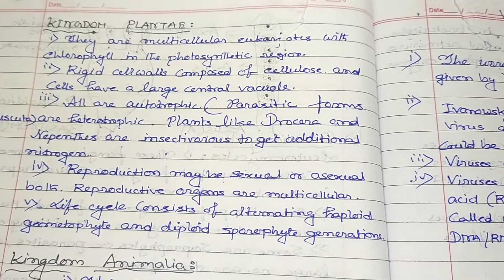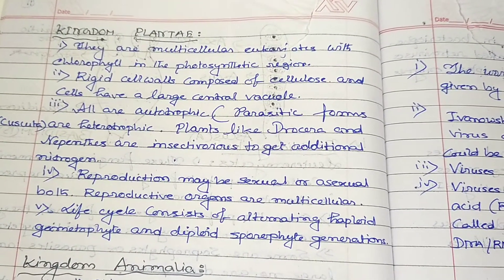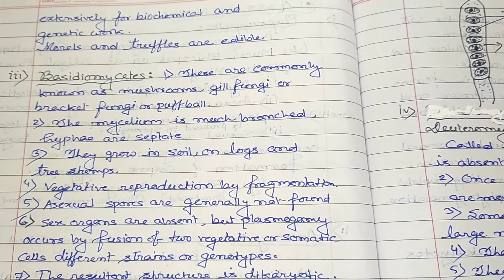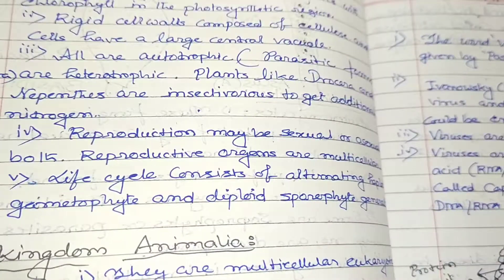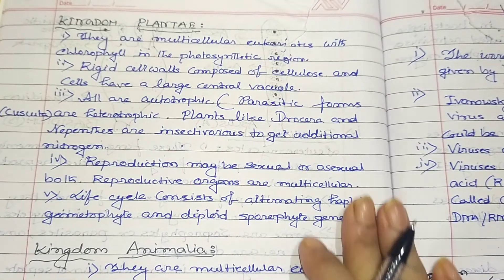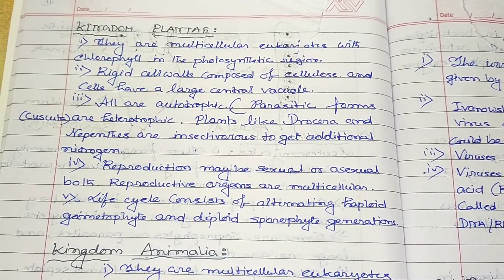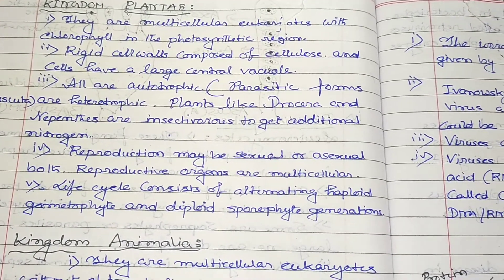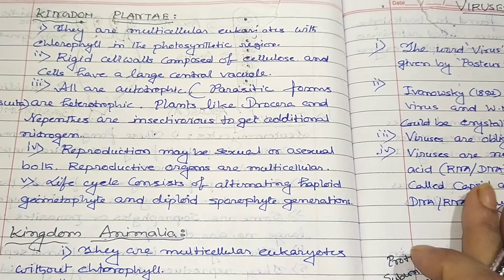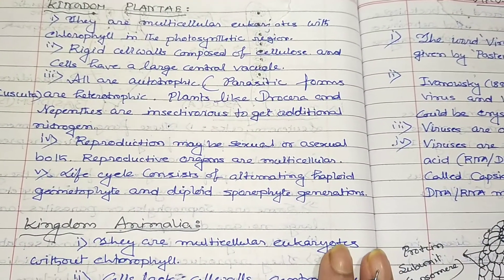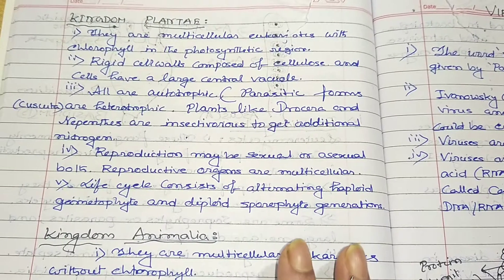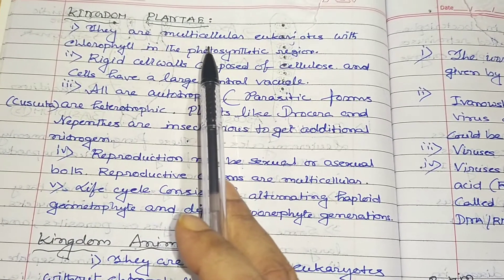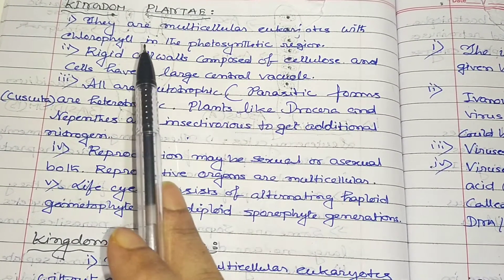Good morning students. Last class we discussed the classification of fungi, their characteristics, and differences between ascomycetes and basidiomycetes. Today we are discussing kingdom Plantae, kingdom Animalia, viruses, plants, lichens — six categories in total.